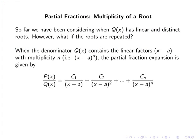So far we have been considering when q has linear and distinct roots, however what if the roots are repeated? When the denominator q contains the linear factor x-a with multiplicity n, i.e. it can be simplified to (x-a)^n, the partial fraction expansion is given by p(x)/q(x) = c1/(x-a) + c2/(x-a)² all the way up to cn/(x-a)^n.